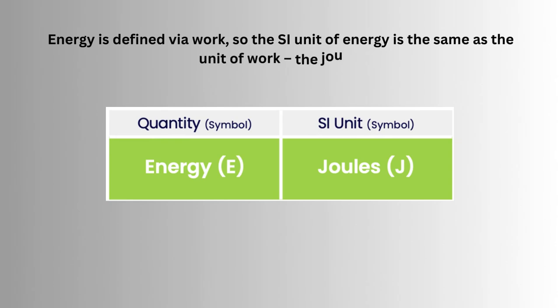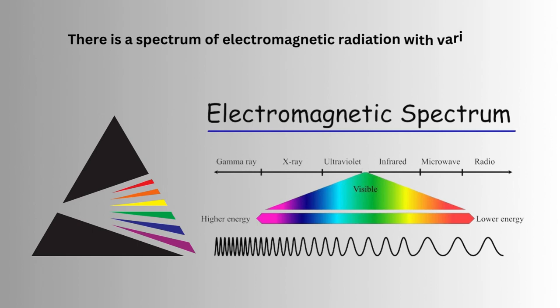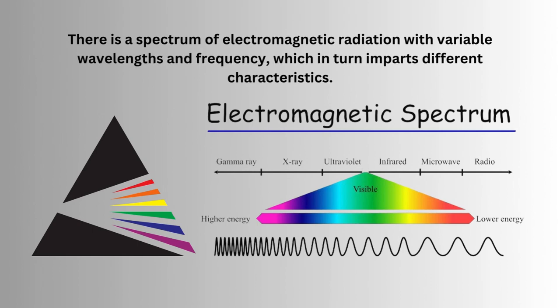Energy is defined via work, so the SI unit of energy is the same as the unit of work, the joule. There is a spectrum of electromagnetic radiation with variable wavelengths and frequency, which in turn imparts different characteristics.